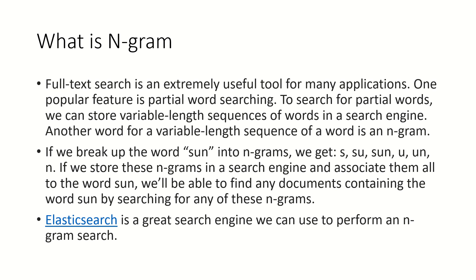Before discussing ngram, let me tell you about full search and partial search. Full text search is an extremely useful tool for many applications. For example, if you are searching for the product called 'laptop' on Google, you provide the full name 'laptop' and you get the result - this is called full search. A popular feature is partial word searching - if you provide a few characters like 'lap' and still get results related to 'laptop', that is called partial search.